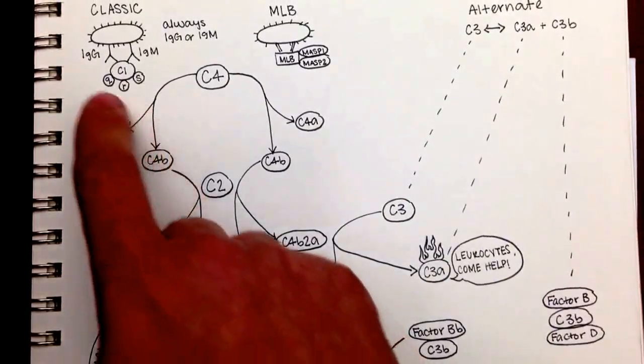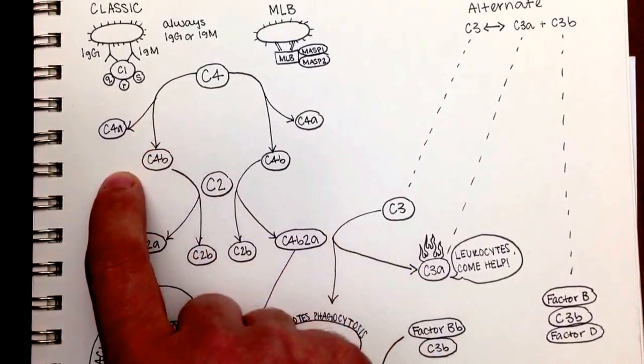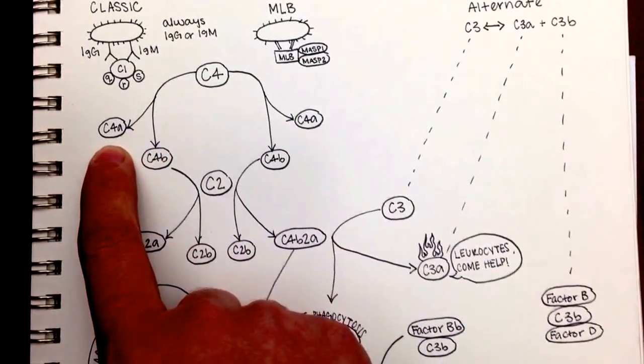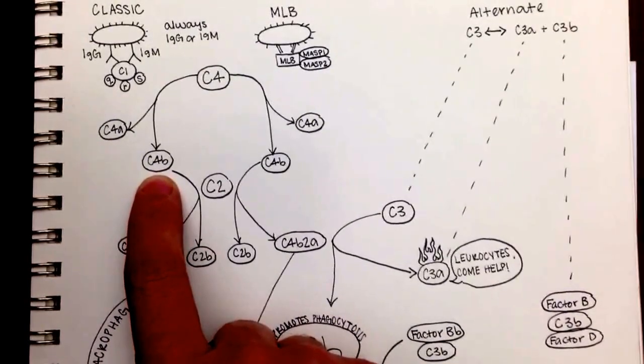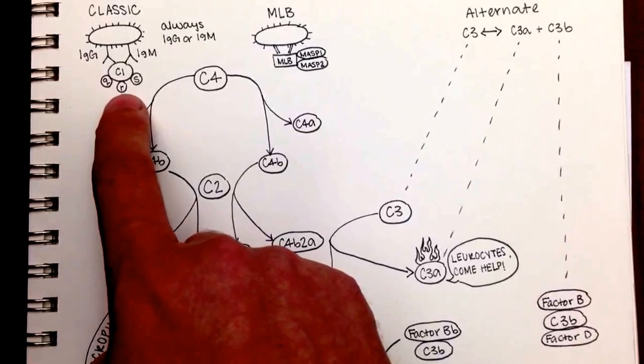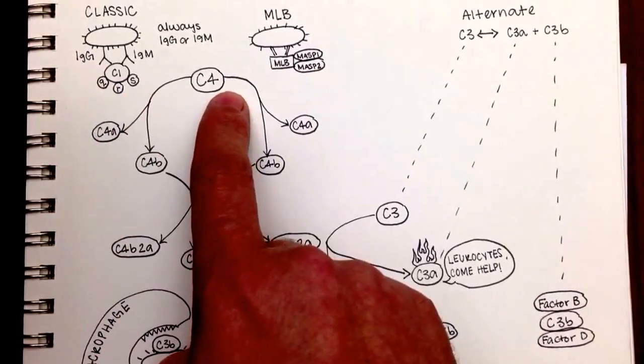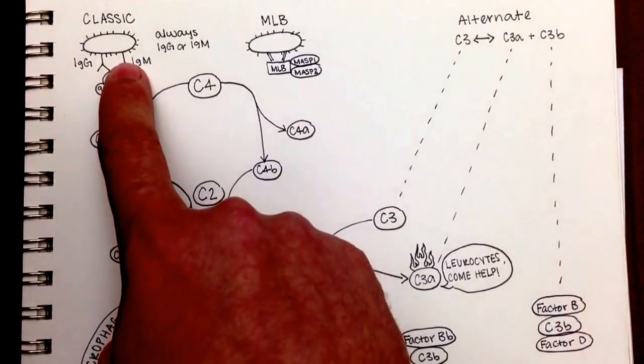And all together, now they're able to take a C4 and cleave it into two pieces, making a C4a, which is the little piece, and a C4b, which is the small piece. So the whole point here was this C1QRS can break C4 into C4a and C4b, thanks to the antibodies binding to the bacteria.